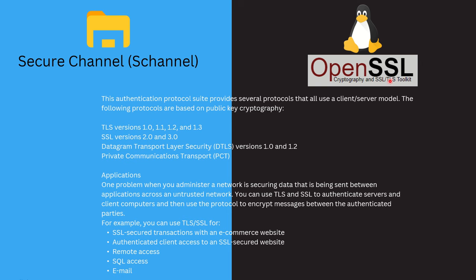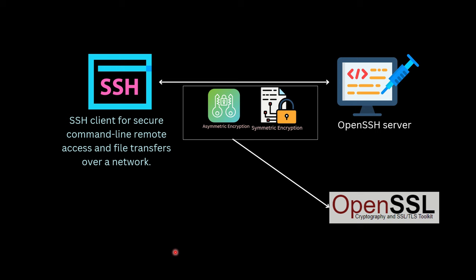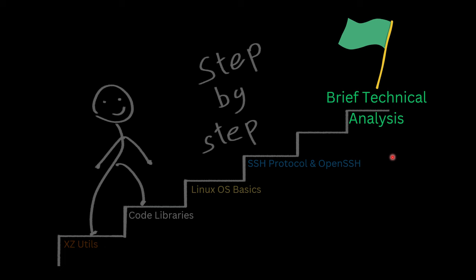OpenSSL is analogous to S-Channel in the Linux world. OpenSSL provides cryptographic functions, making your communication secure. So when you use an SSH client to communicate with an OpenSSH server, your communication is secured using OpenSSL. That covers the SSH protocol and OpenSSH basics — now we'll jump into the brief technical analysis.